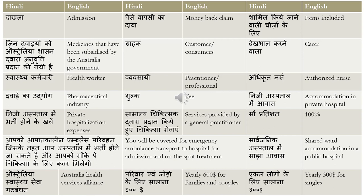'Davai ka udhyog' means pharmaceutical industry. 'Shulk' means fee — for example, 'atirik shulk' means additional fee. 'Niji hospital mein awas' means accommodation in a private hospital — 'awas' is accommodation and 'niji hospital' is private hospital. 'Niji hospital mein bhrati honen ke karche' means private hospitalization expenses. 'Samanya chikisak dwara pradhan kiye huye chikisak sewae' means services provided by a general practitioner — you can say GP as well, but translating to 'samanya chikisak' gives a better impression.